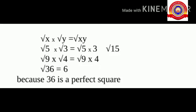Likewise, square root of 9 into square root of 4 is equal to square root of 9 into 4, which is equal to square root of 36, which is equal to 6, because 36 is a perfect square.